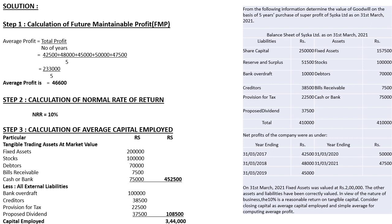Step 2 — calculation of normal rate of return (NRR). The NRR is given in the problem as 10%, so we directly record it as 10%.